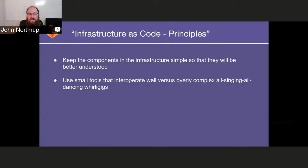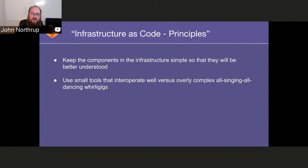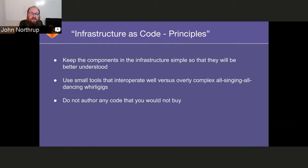The second principle is to use small tools that interoperate well, versus overly complex all-singing, all-dancing solutions. It's very tempting in this industry to pick the thing that does everything, but the problem is it does all the things just not quite well. We want small tools that do jobs really well. Third, as software engineers and DevOps practitioners writing code that affects infrastructure, a key principle is: do not author any code that you would not buy. If you wouldn't pay somebody to write that code for you, don't write that code yourself.